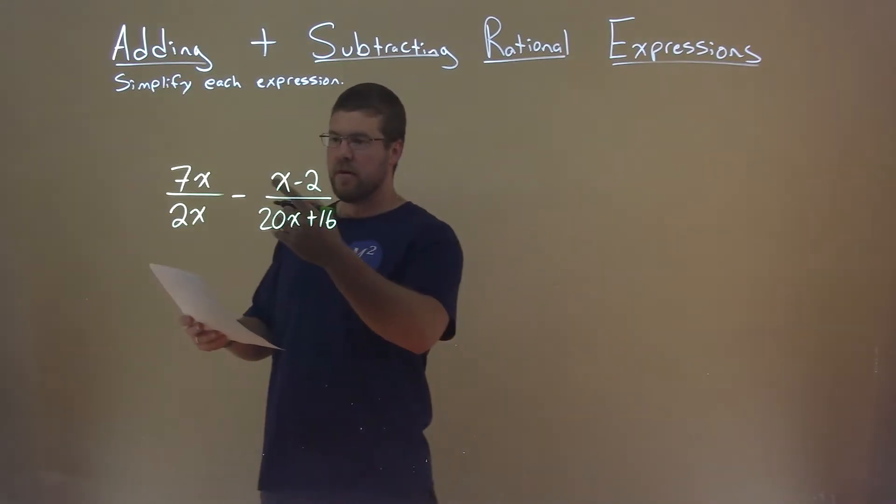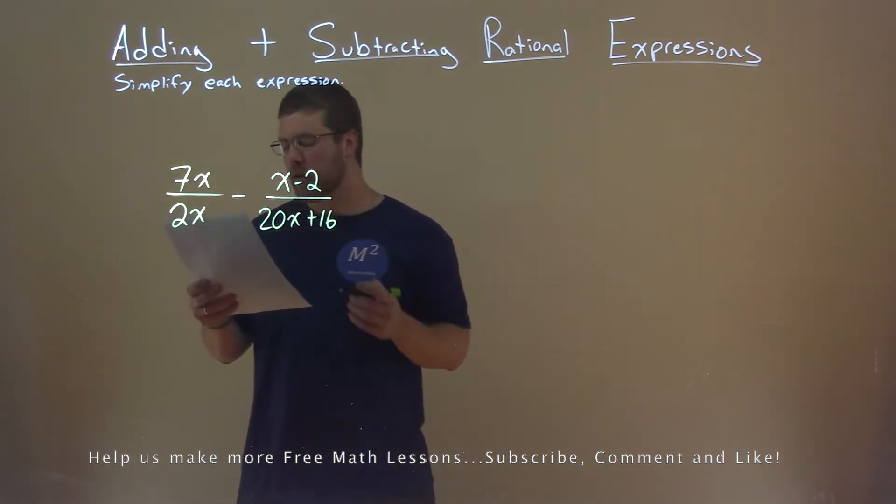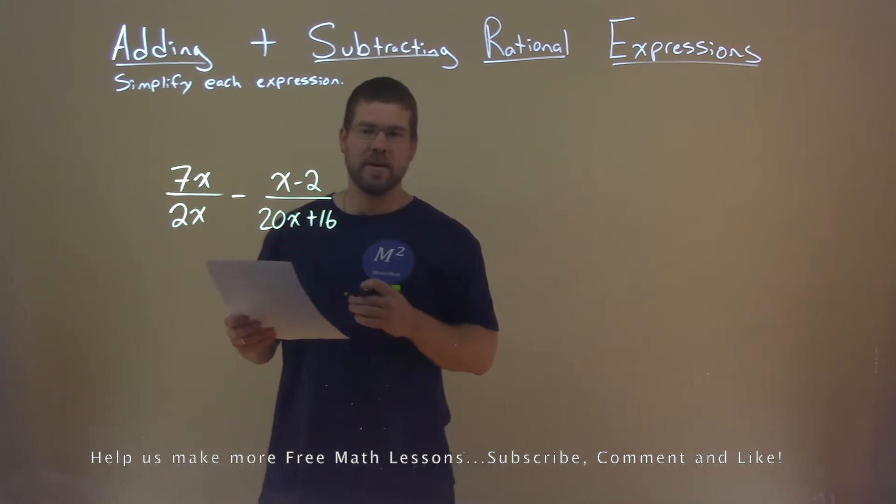We're given this problem right here, 7x divided by 2x minus x minus 2 divided by 20x plus 16, and we need to simplify this expression.